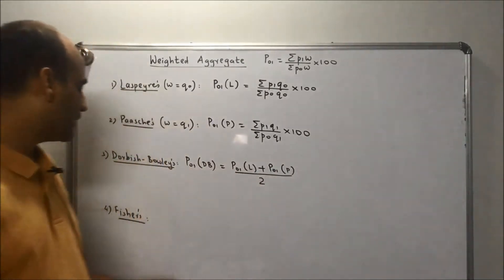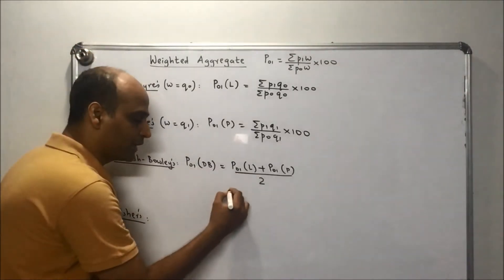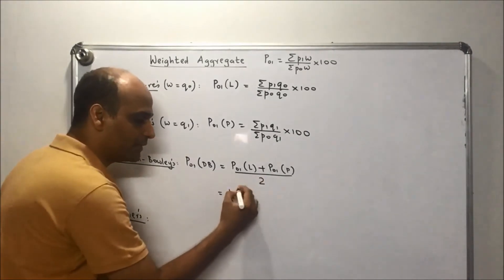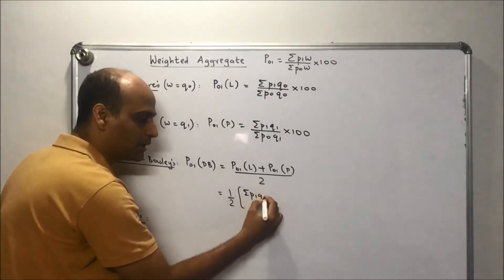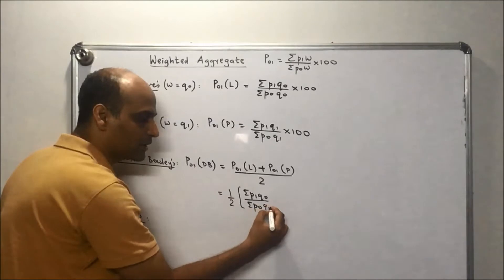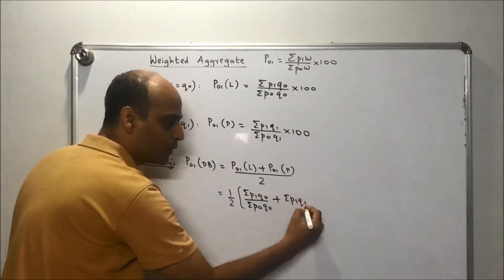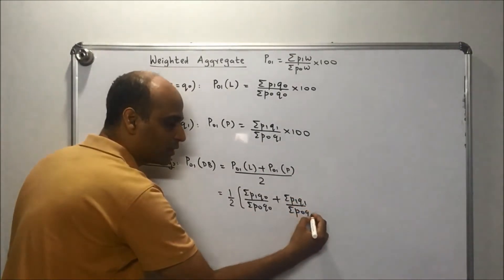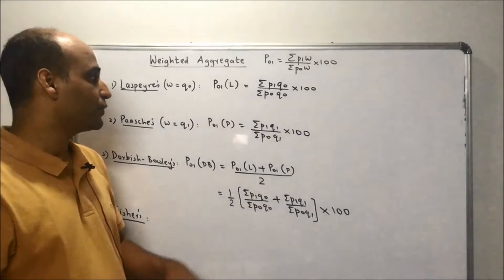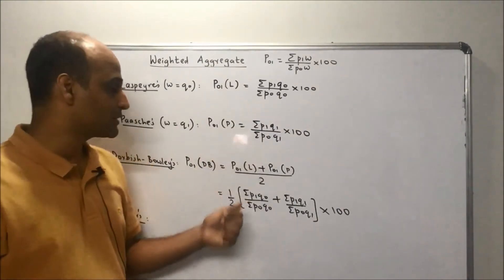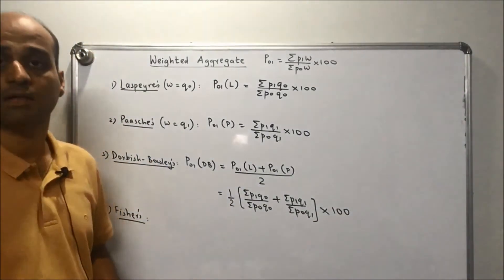You could also write the detailed formula for Dorbish-Bowley's. Setting aside the half, write the Laspeyre's ratio — p1·q0 upon p0·q0 — plus the Paasche's ratio — p1·q1 upon p0·q1 — and multiply by 100. This is the detailed formula for Dorbish-Bowley's. If you already have Laspeyre's and Paasche's indices, you can simply take the arithmetic mean.